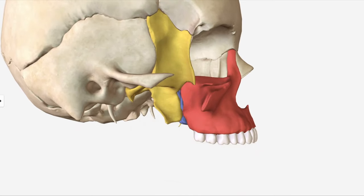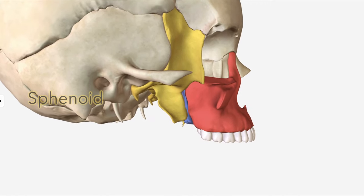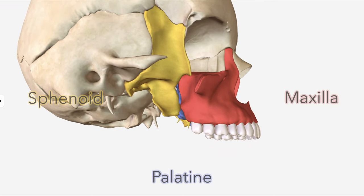The pterygopalatine fossa is a space bounded by three bones: the sphenoid, the maxilla, and the palatine in here.